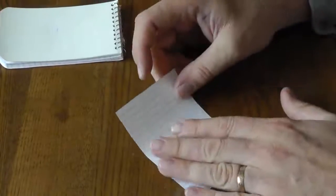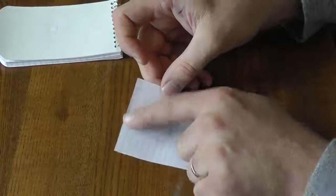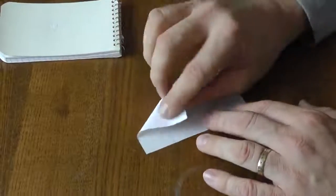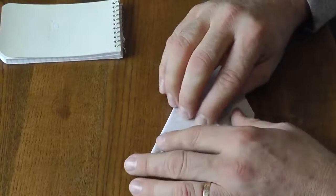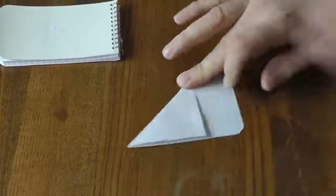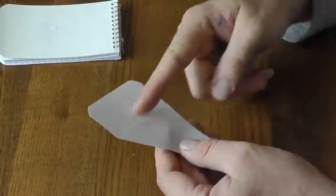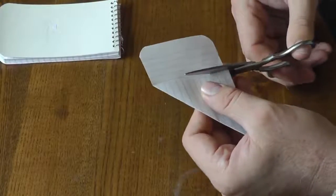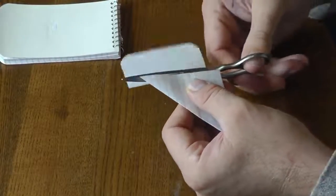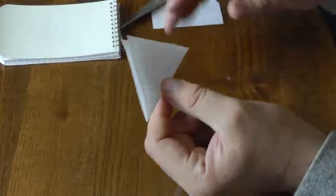And now what I want to do is make this square. So I take this edge here that I just cut and bring it down here along this edge. Now this tells me where I need to cut along here to make this triangle, which gives me a perfect square piece of paper.